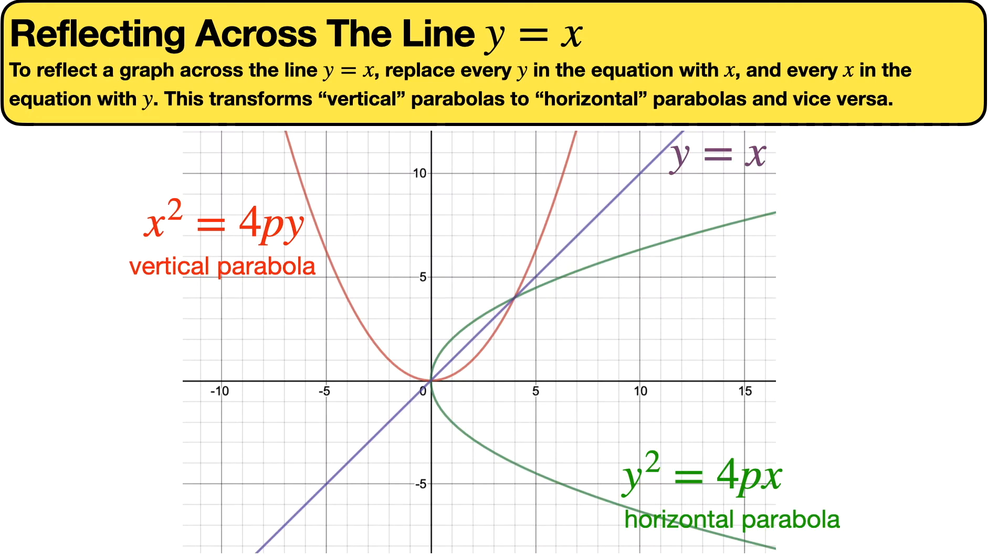Now we've discussed vertical parabolas, but now it's time to discuss what are called horizontal parabolas. Vertical parabolas are like the one in red here, where the parabola opens upwards. In order to get a horizontal parabola, we can make a note that it is simply a vertical parabola reflected across the line y = x.